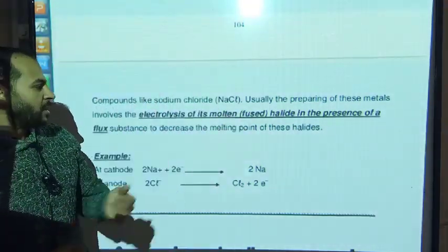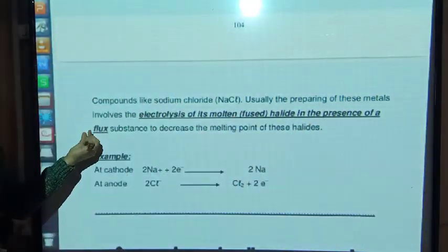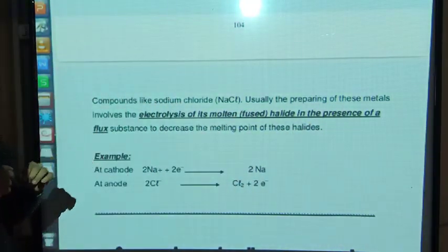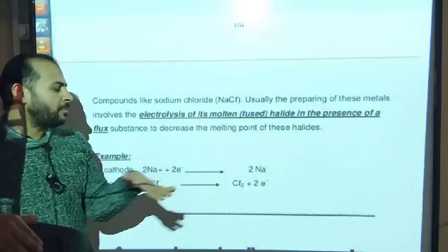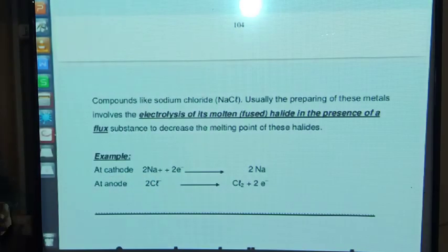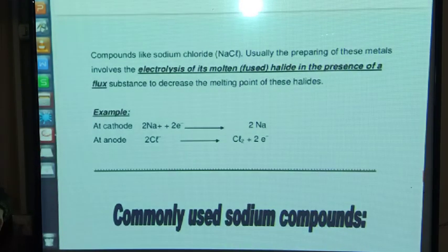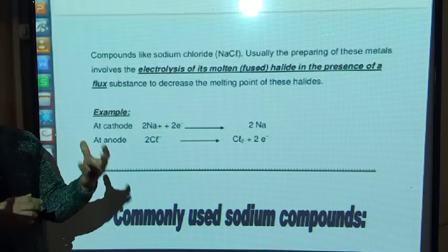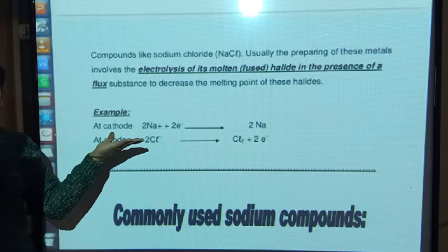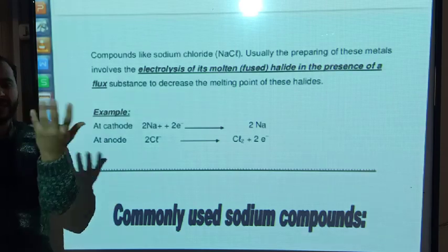Electrolysis is performed on fused or molten salts in the presence of a flux. A flux is a substance used to decrease the melting point of the compound. We have sodium chloride; when we perform electrolysis on it, it decomposes into sodium ions (Na⁺) and chloride ions (Cl⁻). The chloride ion means a chlorine atom that gained an electron.